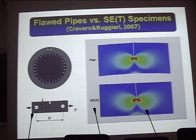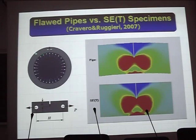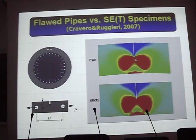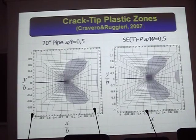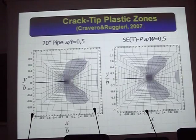Next is the SENT — a pin-loaded specimen. You can see the same axial loading. At the same J level, you can see that the pipe and the SENT have nearly the same development of the process zone or plastic shape. A better picture: the 20-inch pipe with A over T = 0.5, and SENT with A over T = 0.5 show the same normalized plastic zone.